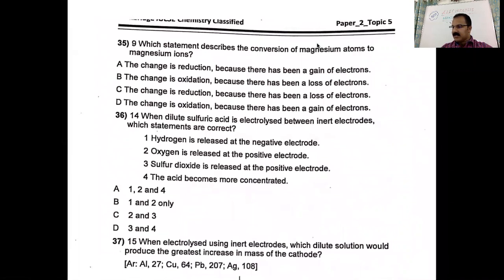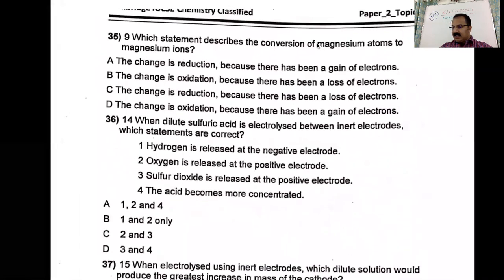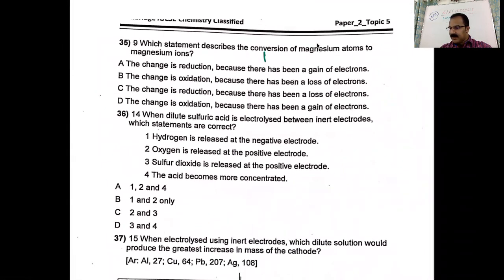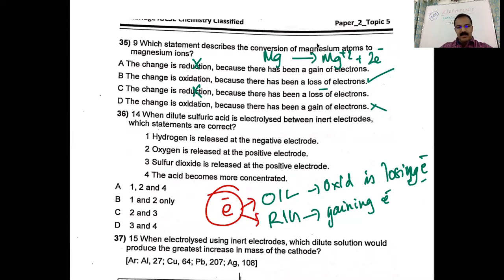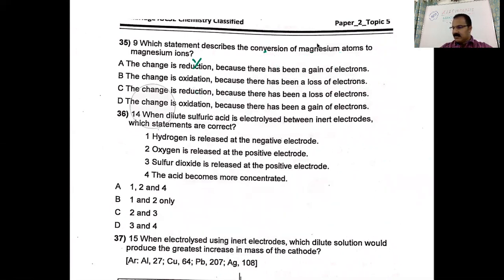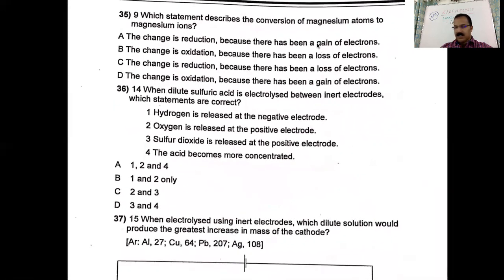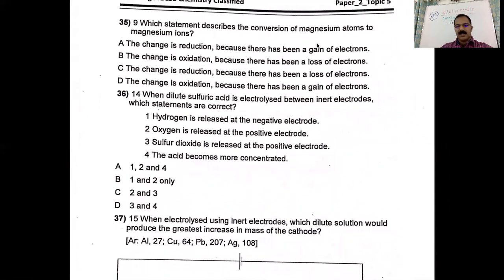Which statement describes the conversion of magnesium atoms to magnesium ions? Magnesium atom loses an electron to become a magnesium ion. The change is reduction? No — the change is oxidation because there has been a loss of electron. The statement about gaining an electron is also wrong. Remember OIL RIG: Oxidation Is Losing electrons, Reduction Is Gaining electrons. In electrochemistry, oxidation and reduction are explained in terms of electrons, hydrogen, oxygen, and oxidation number.